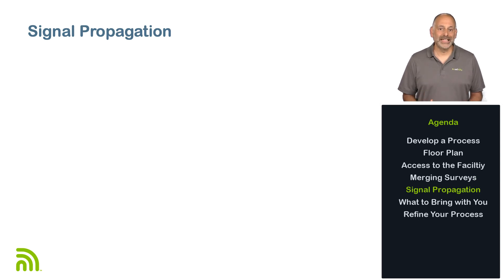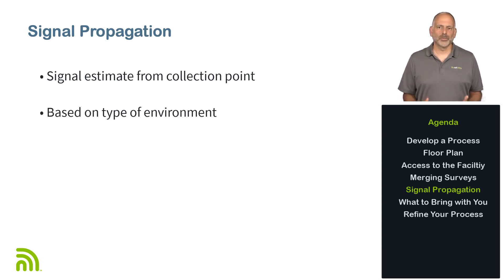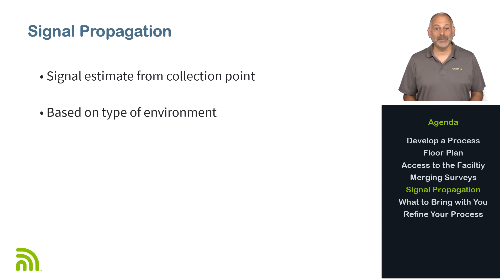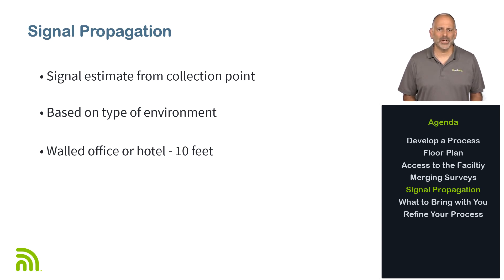One of the parameters you'll need when setting up the survey is signal propagation. This is the distance from the collection point where AirMapper estimates the RF signal quality. The correct signal propagation setting is based on the type of environment you're surveying. For example, if you're in an office space or hotel, you might want to use a signal propagation radius of 10 feet or less — meaning the signal is expected to be the same within 10 feet of where the measurement was taken. If the floor plan is complex, with many elements such as cubicles, inventory racks, file cabinets, hallways, and enclosed offices, then you may need a smaller radius.